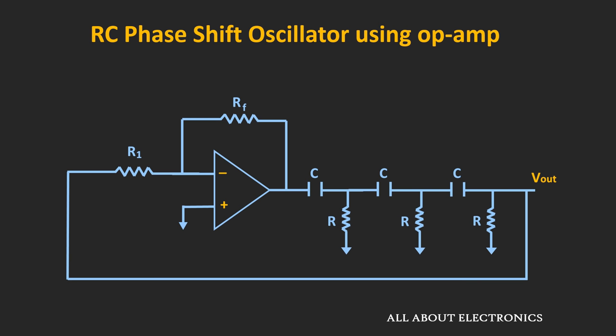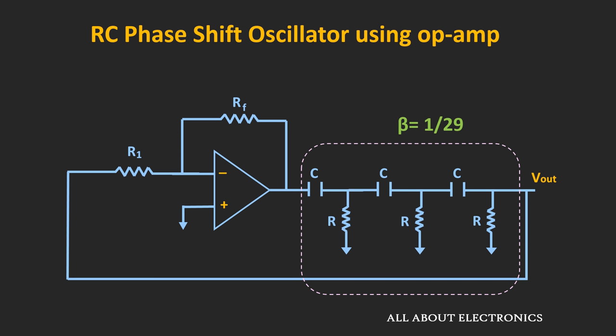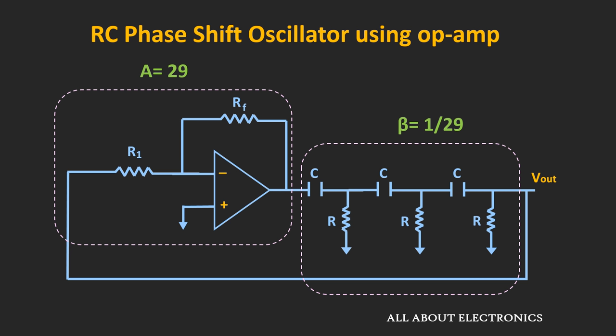In this RC phase shift oscillator, the attenuation introduced by the feedback stage is equal to 1/29. To achieve unity loop gain, the gain provided by the op-amp should be equal to 29. This circuit will provide unity gain only at one particular frequency, and only at that particular frequency will the overall phase shift of the circuit equal zero.